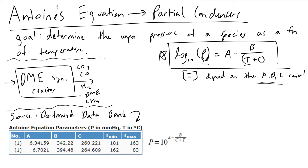In practice, we have resources that we turn to in order to look up these constants A, B, and C in tables. The Dortmund Data Bank, abbreviated DDB, is one very reliable and reputable source.